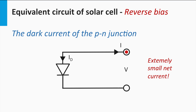If we put the P-N junction in the dark and apply a reverse bias, it generates an extremely small current in the block direction of the diode. The current direction in electrical circuits points in the direction in which the positive charges flow, meaning electrons — which are negatively charged — flow in the opposite direction. Under reverse bias, this extremely small current in the block direction can be represented by electrons moving in the direction of the triangle.